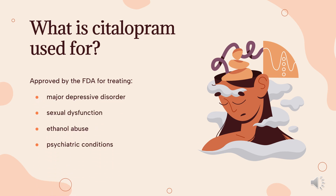What is Citalopram used for? Citalopram is approved by the FDA for treating adults with major depressive disorder. It has also been used off-label to treat various conditions, including but not limited to sexual dysfunction, ethanol abuse, psychiatric conditions such as obsessive-compulsive disorder (OCD), social anxiety disorder, panic disorder, and diabetic neuropathy.